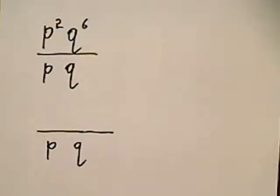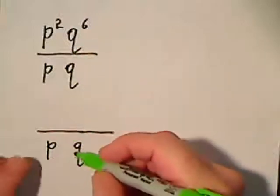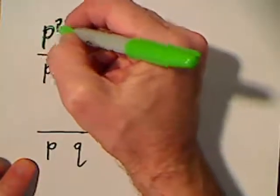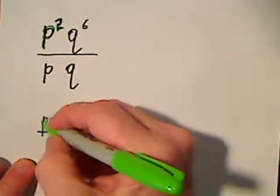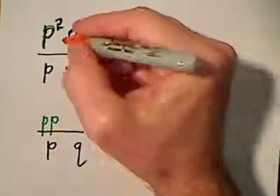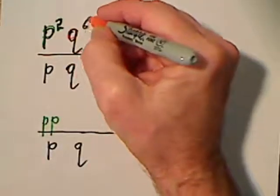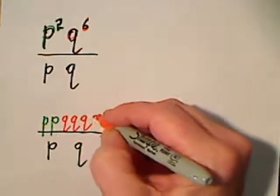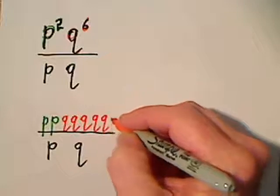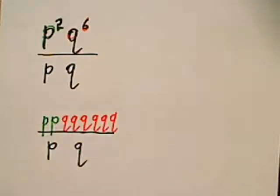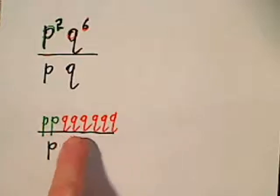Okay, so I'm taking the original problem, I'm just rewriting it. There's my denominator. P is simply P times P, okay, and then Q to the sixth is one, two, three, four, five, six Q's all multiplied together. And because everything here is being multiplied, everything here is being multiplied, and all of this is supposed to divide,